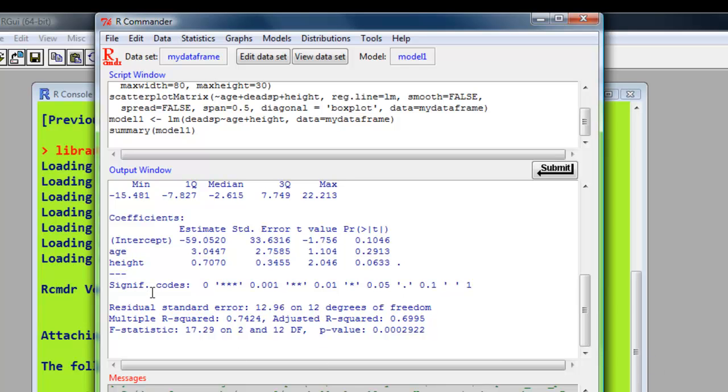And here are the results. So we've got the parameter estimates, age and height and the intercept there, exactly the same as in SPSS, with the p-values at the end. Then we have our multiple R-squared, adjusted multiple R-squared, and the F-statistic and its p-value there, exactly the same as in SPSS.